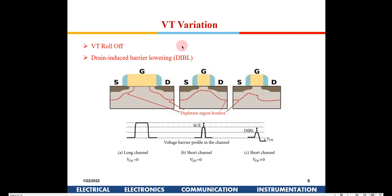Recall how we defined VT: we needed to create a depletion layer and then pull electrons by applying a gate voltage. In a short channel device, the source and drain N-regions automatically do part of that work, resulting in a reduction of VT. As devices are shrunk, VT reduces because the junctions come closer together. As a designer, if you need a full VT for a specific application, you can use larger channel length devices.